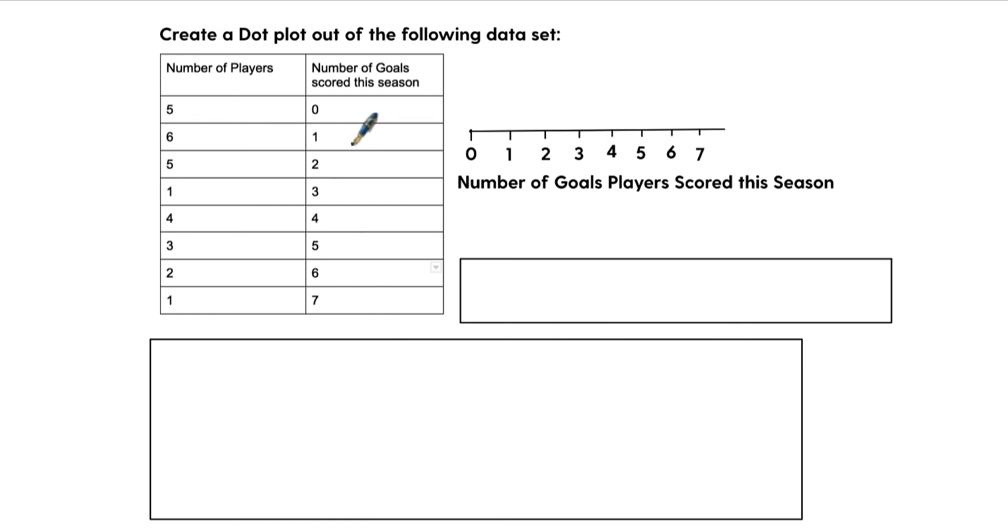Let's make a dot plot. And this could be something that you would be asked to do on the GED as well. So it says create a dot plot out of the following data sets. We have the number of players and then over here is the number of goals they scored each season. In other words, we have five players, let's assume it's a soccer team, who scored zero goals. We have six players who scored one goal. We have five players who scored two goals. We have one player who scored three goals and so on.